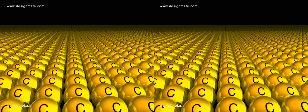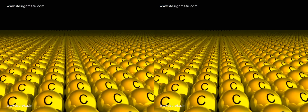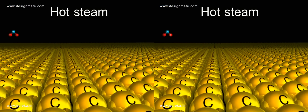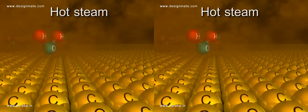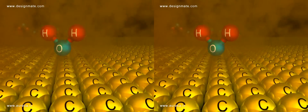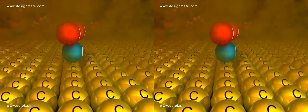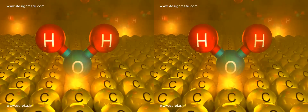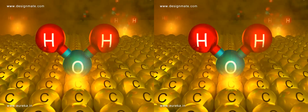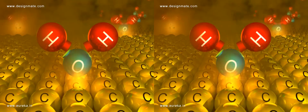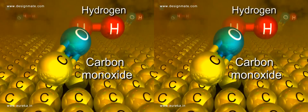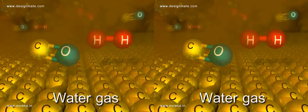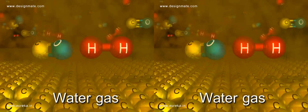Coke contains about 60% of carbon. When hot steam is passed over coke, carbon in the form of coke reacts with water vapors to form a mixture of carbon monoxide and hydrogen, which is called water gas.